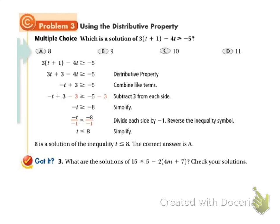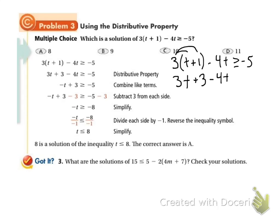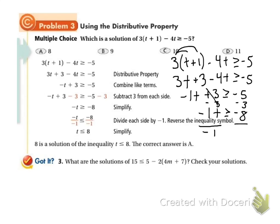And finally, using the distributive property. 3 times (t plus 1) minus 4t is greater than or equal to negative 5. We need to simplify first, so I'm going to distribute that 3 in first, which gives me 3t plus 3 minus 4t is greater than or equal to negative 5. I can combine my t's: 3t minus 4t is negative 1t, so negative 1t plus 3 is greater than or equal to negative 5. I'll subtract 3 from both sides — that cancels off — and I have negative 1t is greater than or equal to negative 8. I need to divide by negative 1. When I divide by a negative number, I switch my sign, so I get t is less than or equal to 8.